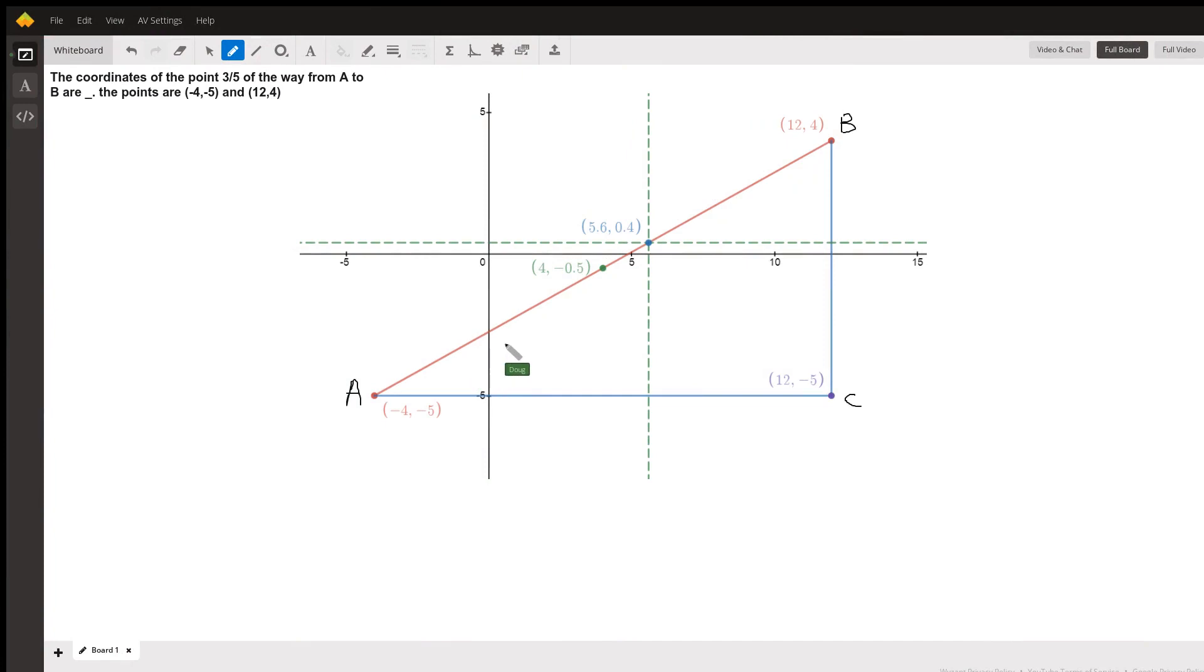I've created a triangle here where segment AB is the hypotenuse and AC and BC are the legs, just to show why this technique that we're about to use will help you find the coordinates of the point that's three-fifths of the way from A to B. The idea is that this green dotted line, this vertical green dotted line, we want to find the coordinates of that point, or at least the x-coordinate of that point.